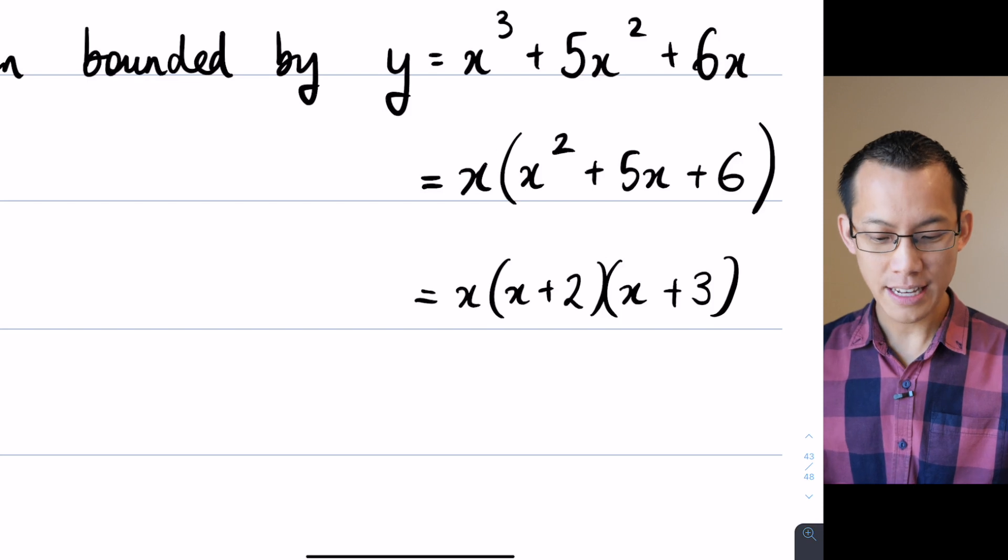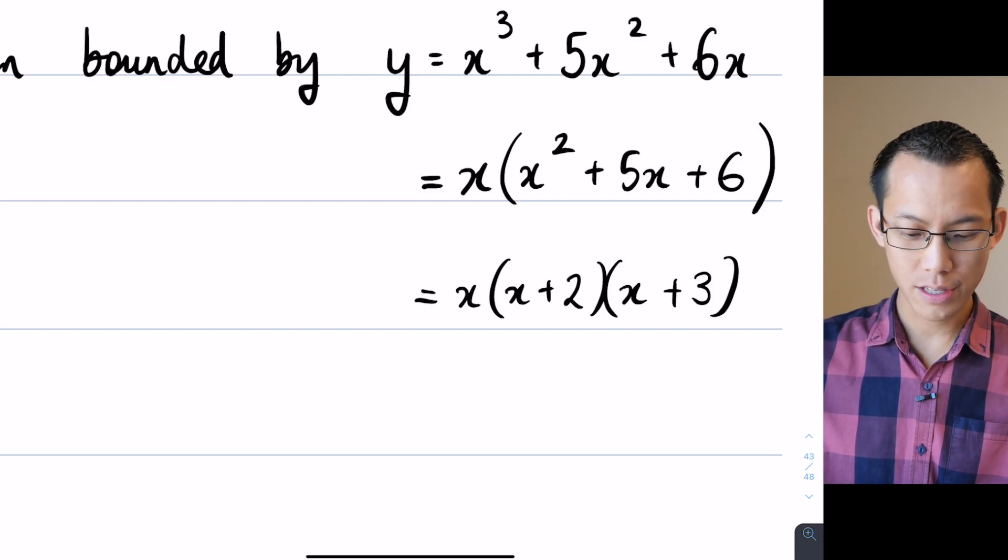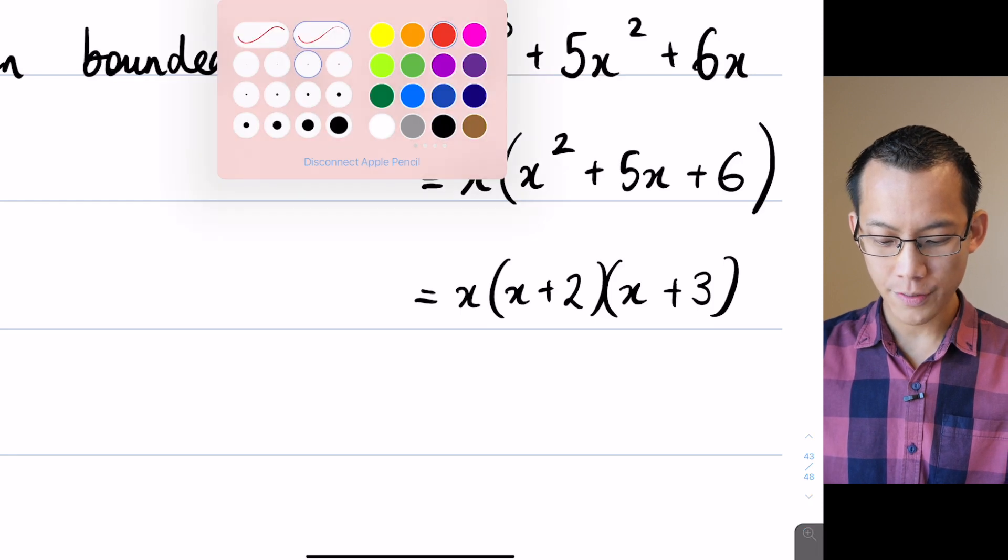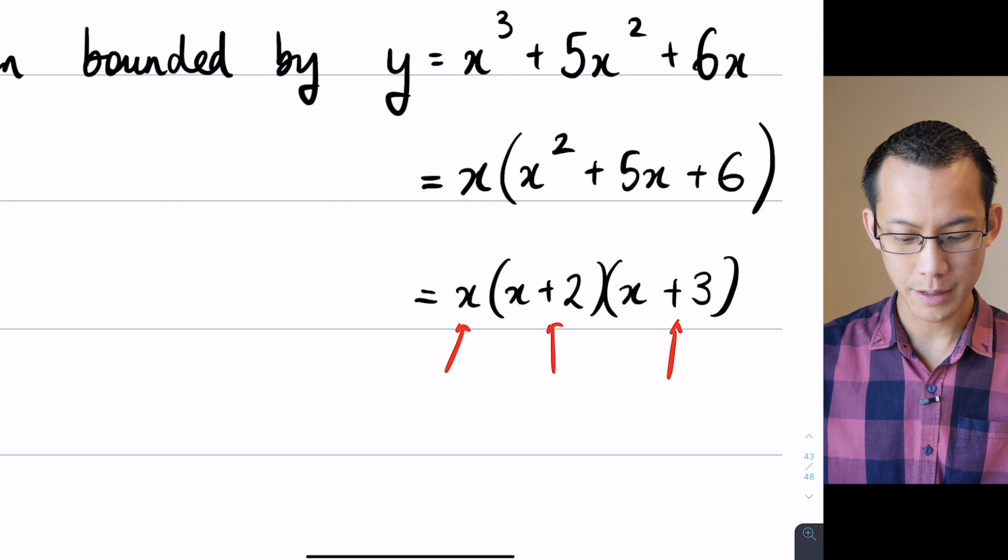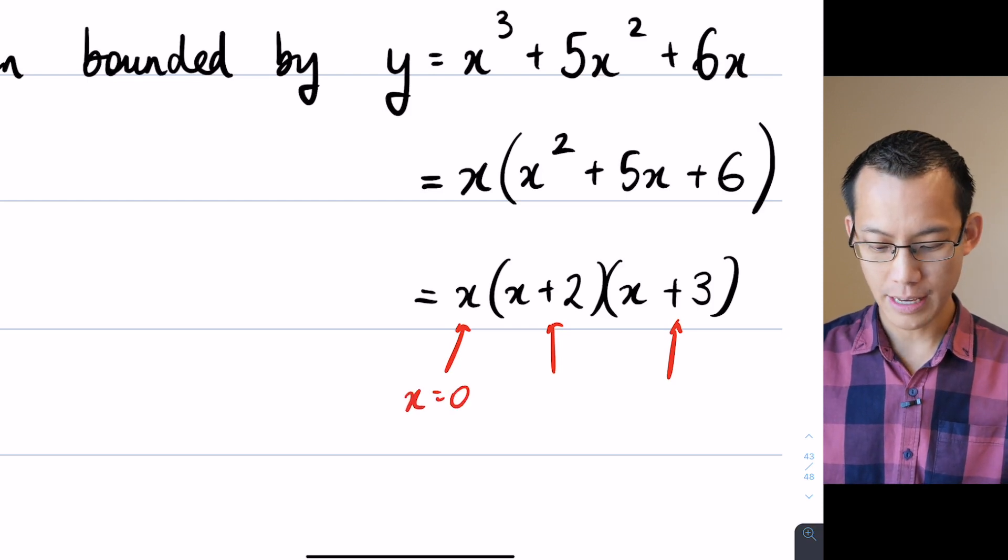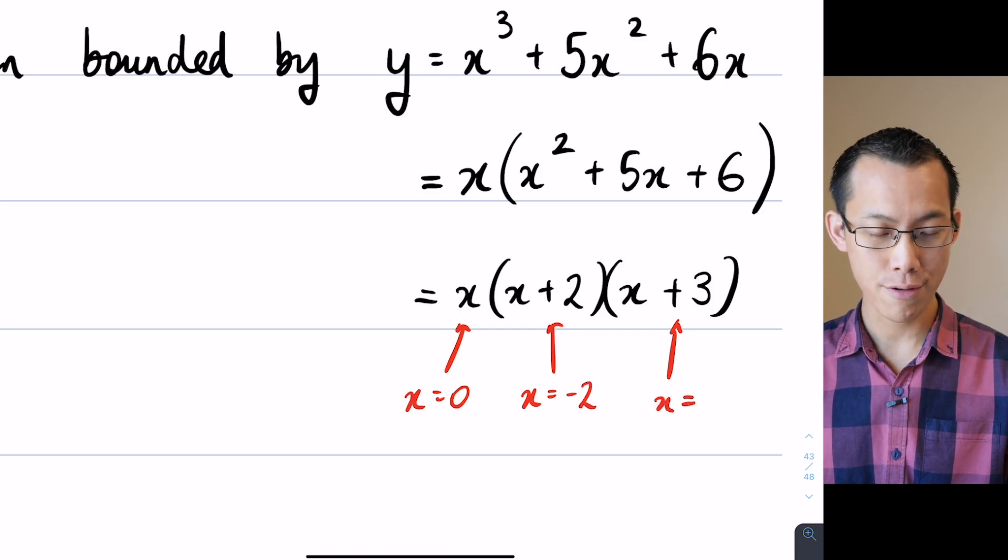I've factorized completely. Now I've done this so that I can sketch. Now remember, just like before, each one of these factors tells me an intercept. The first one tells me an intercept of x equals 0. The second one, x equals negative 2. And then this last one, x equals negative 3.